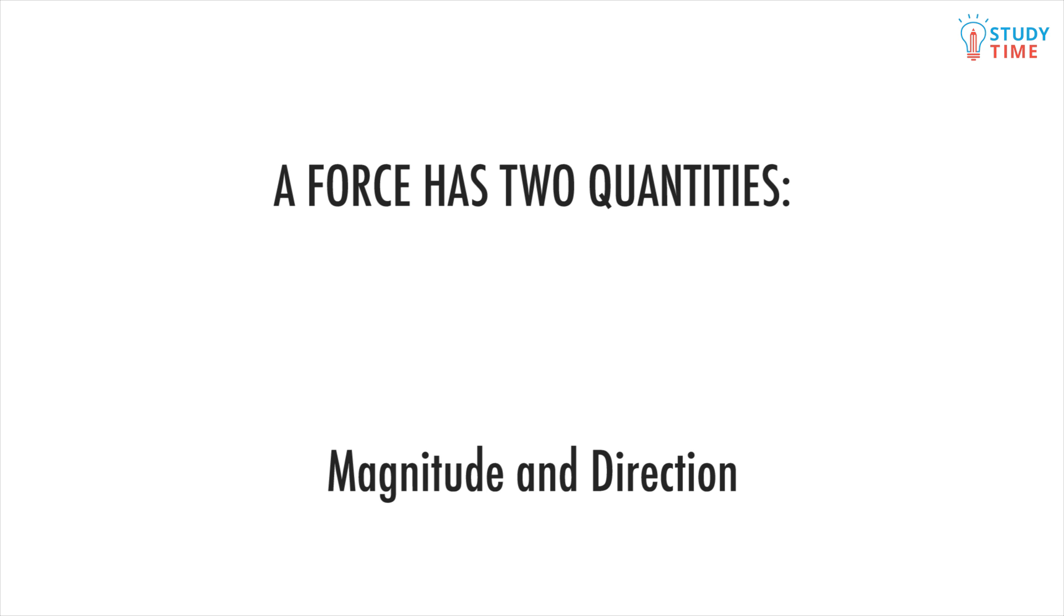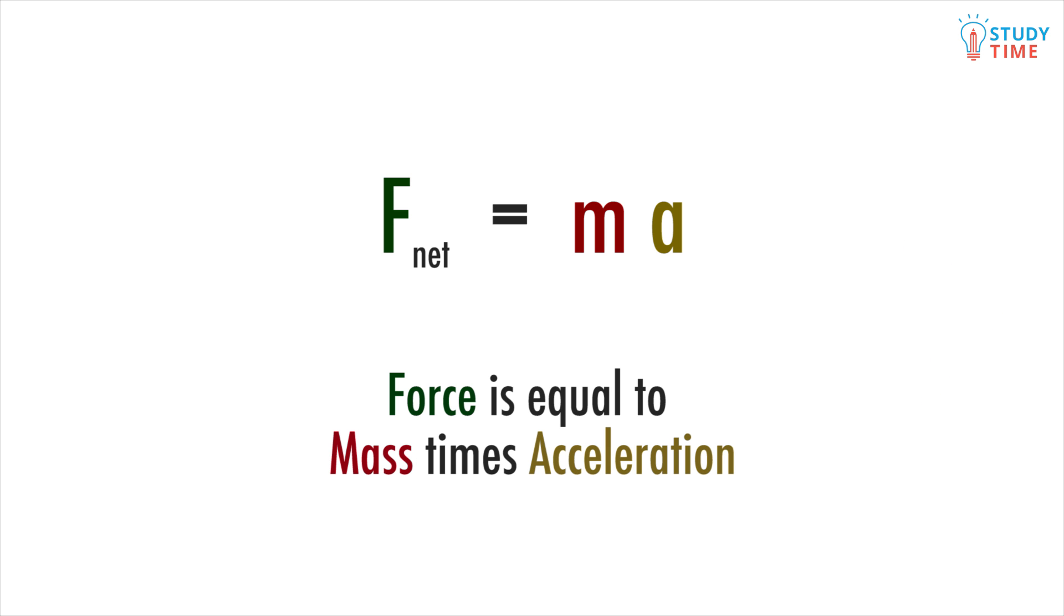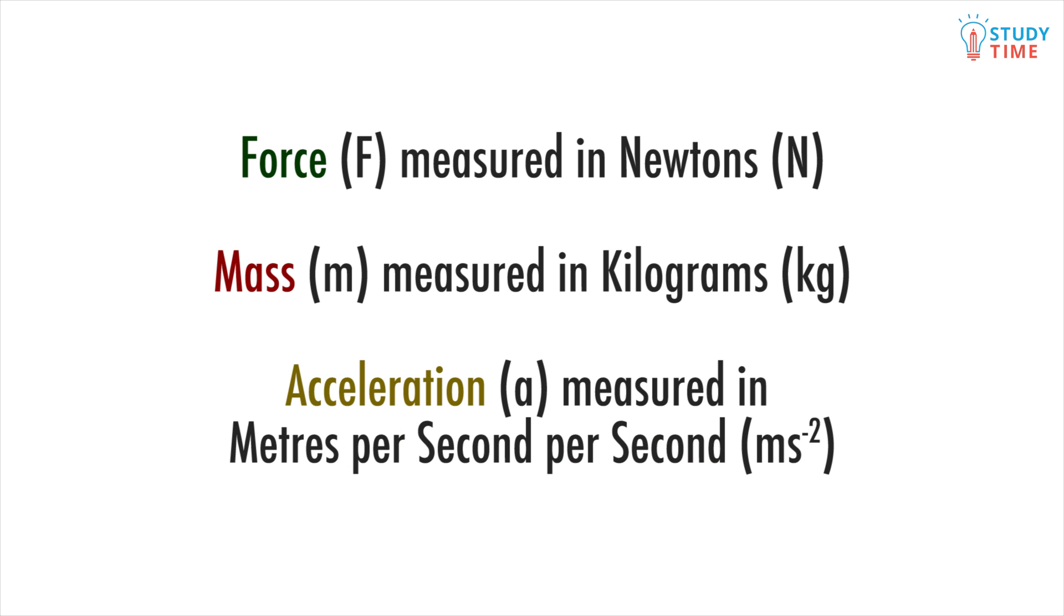A force has two quantities a magnitude as in how big it is and a direction. Let's have a look at the basic equation for a force. F equals ma. This equation reads force equals mass times acceleration. Force is measured in newtons, mass is measured in kilograms, and acceleration in meters per second per second.